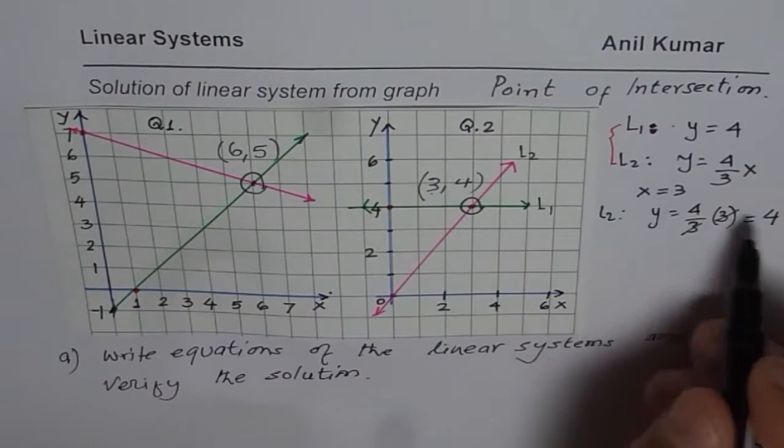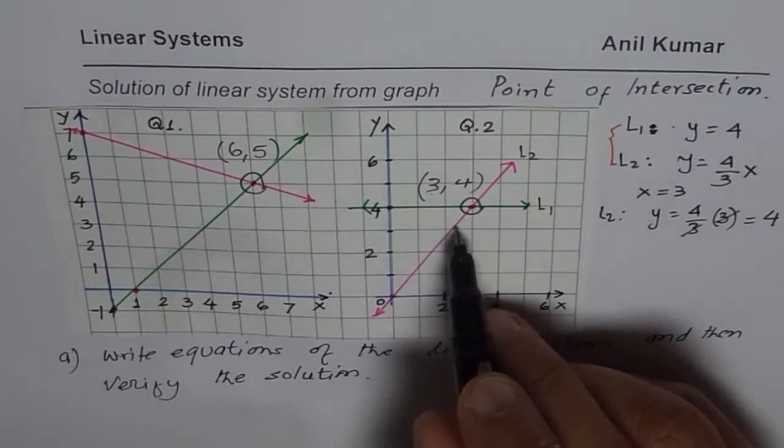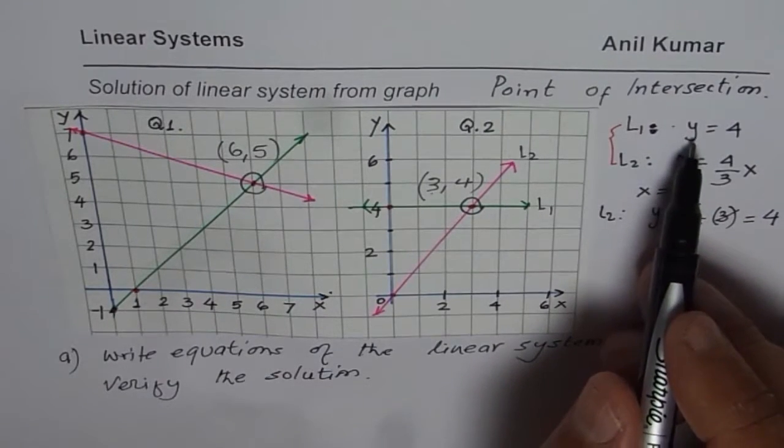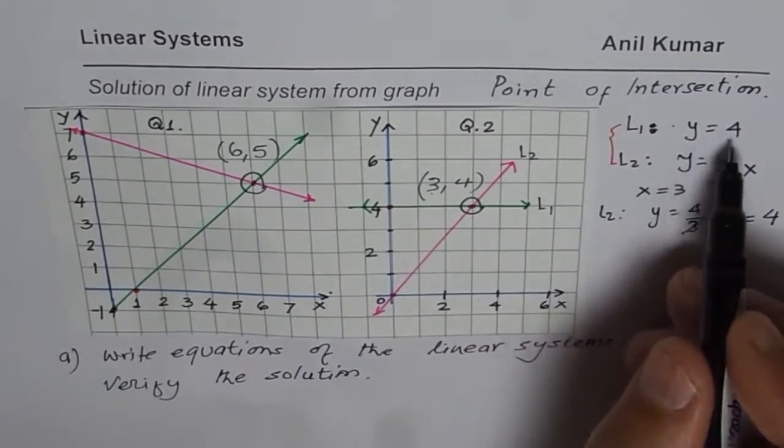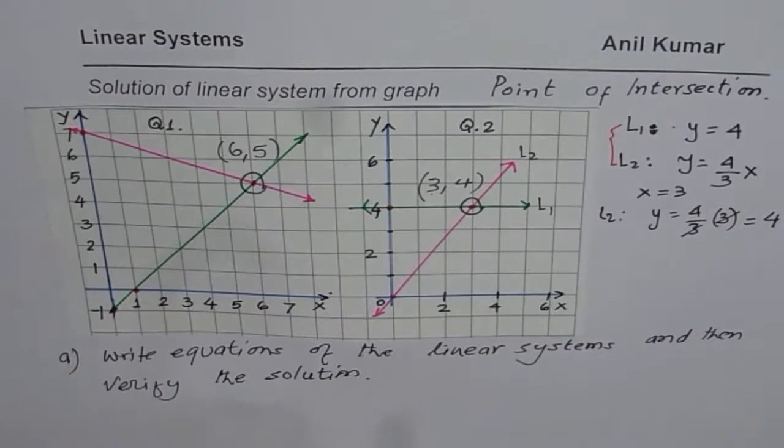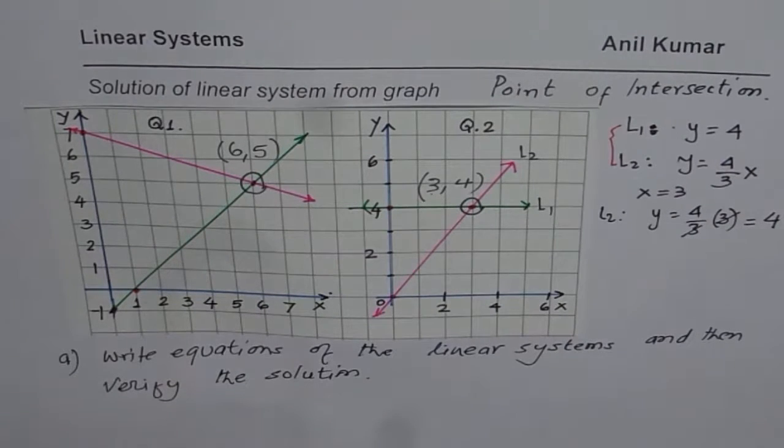So the coordinate point (3, 4) is common to both the lines. As far as line 1 is concerned, for every value of x, the value of y is 4. And therefore, for 3 also, it is going to be 4. That is how you can verify your solution.